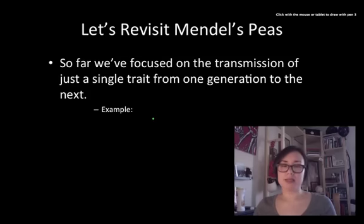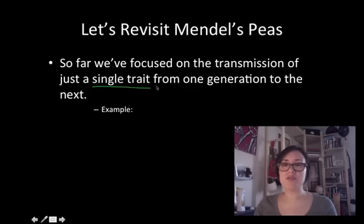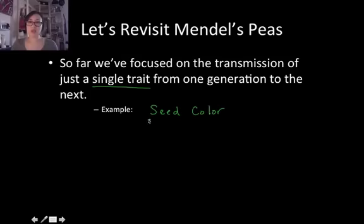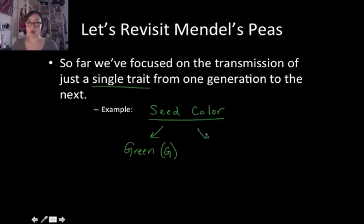So let's revisit Mendel's peas. So far when we've talked about simple Mendelian genetics, we focus on the transmission of just a single trait from one generation to the next. For example, we've talked about seed color. When we're looking at seed color, it's either going to be green — we use a capital G for that because it's dominant — or it's going to be yellow, and we're going to use a lowercase g because it's recessive.